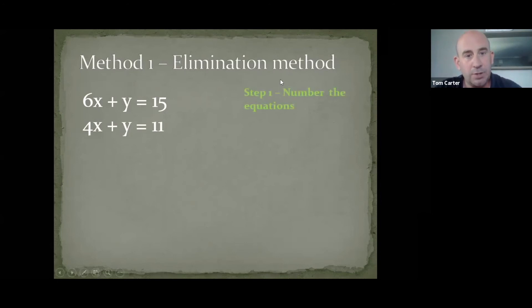So, step one, number the equations. So, number one, number two. Now, what I'm looking to do is I'm looking to get rid of either the x's or the y's. And the way I can do that is I can either add the two equations together or I can take one from the other. Now, my eye is drawn to the fact that there's a y in both of these. And because those y's match up, they're the ones that I'm going to try and get rid of.